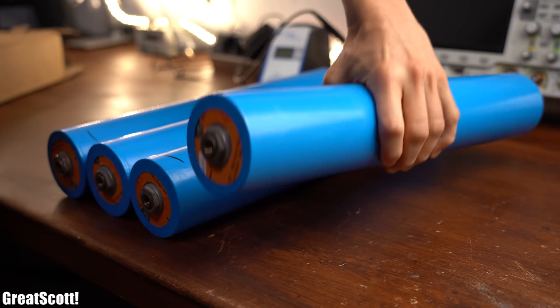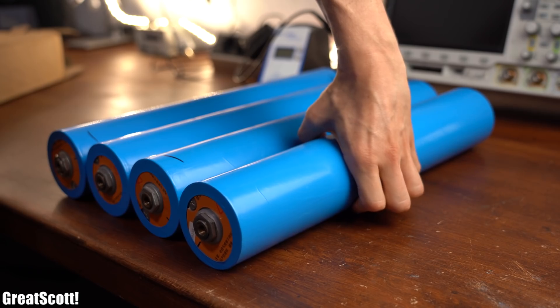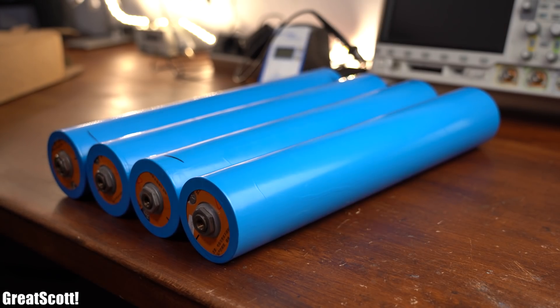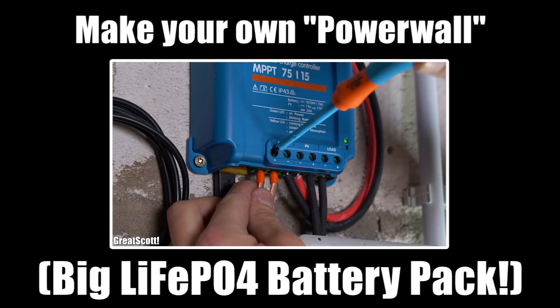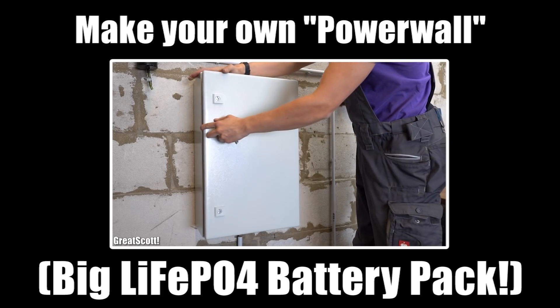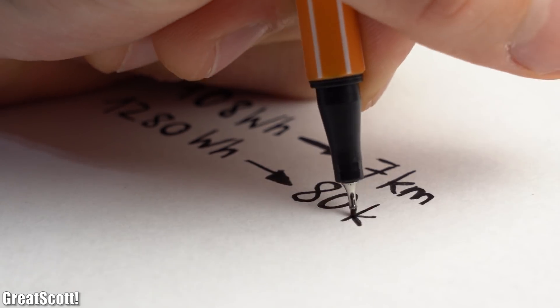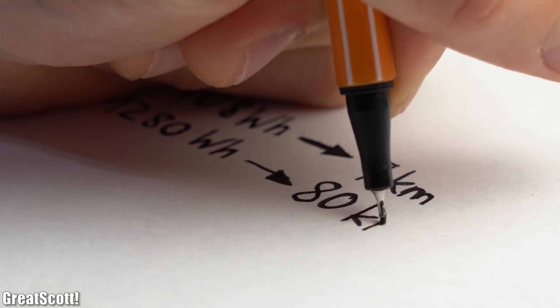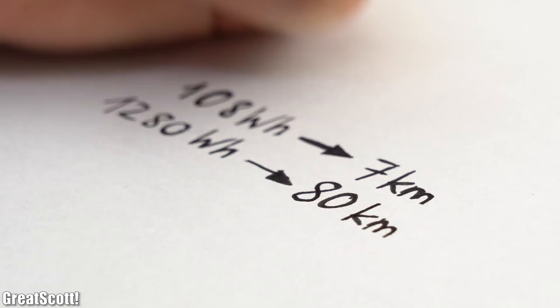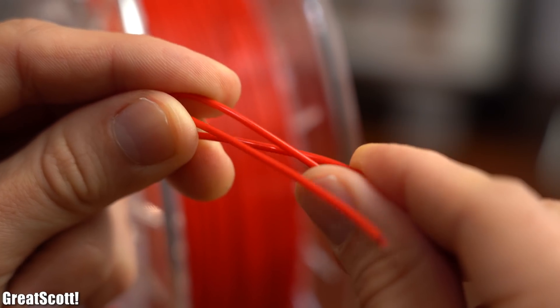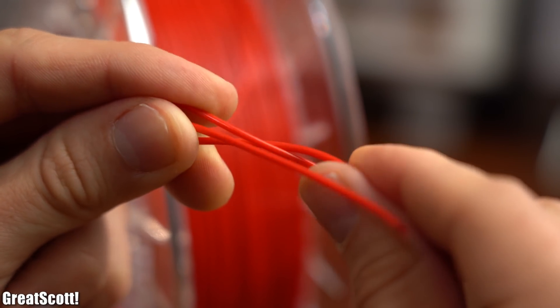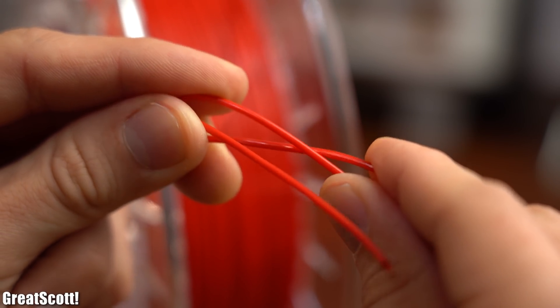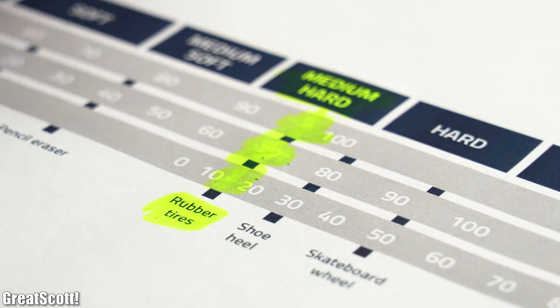A solution to the latter problem could be those four big lithium iron phosphate cells that are originally ordered for my garage Powerwall project but never used. Those could theoretically power the longboard for a distance of whopping 80 kilometers. And a solution to the wheel problem could be this flexible TPU filament whose shore hardness is similar to that of rubber tires.